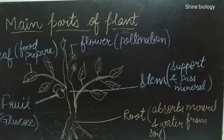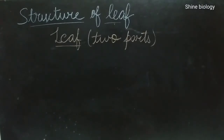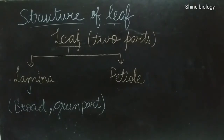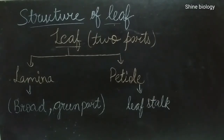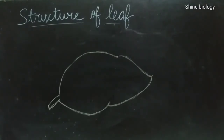Now let's discuss about the leaf in more detail. The leaf basically consists of two parts: lamina and petiol. Lamina is the broad and green part of the leaf, whereas petiol is the leaf stalk. In this diagram, this structure indicates that this is a leaf, and we discussed that the leaf consists of these two parts: lamina and petiol.